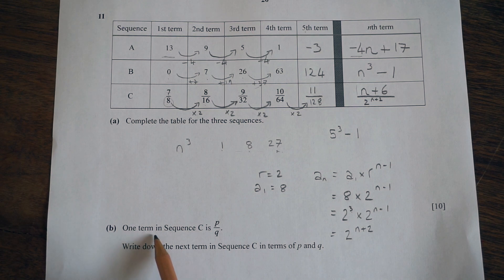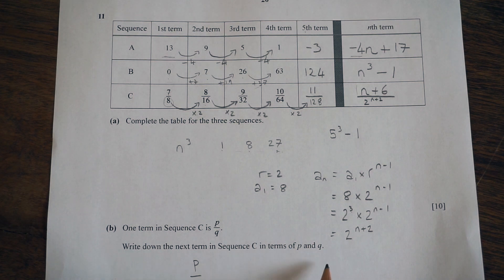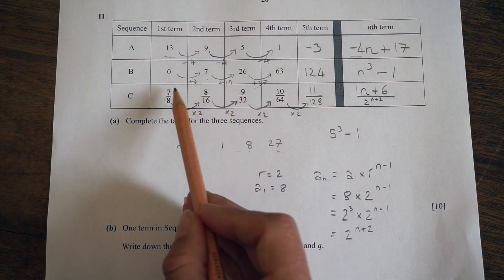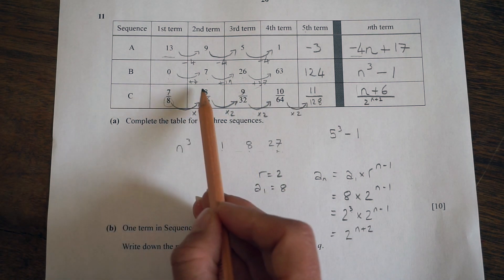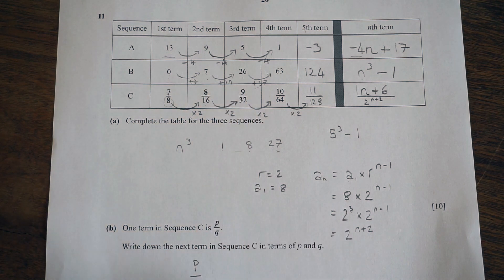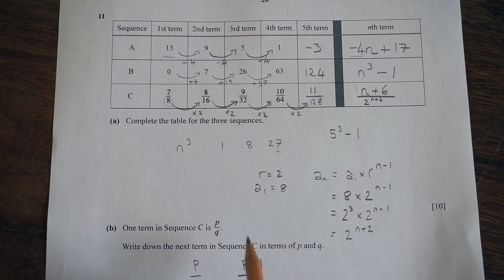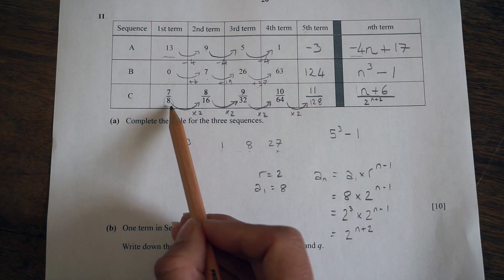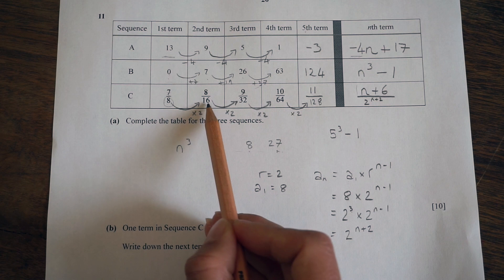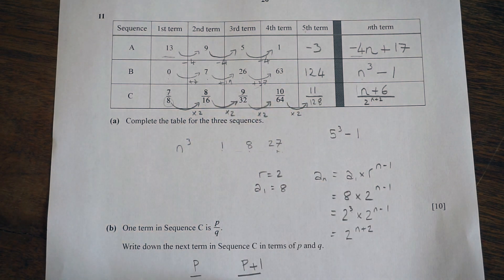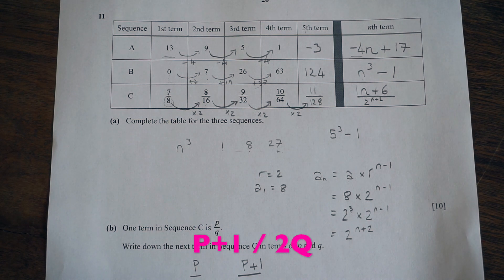Part b says one term in sequence C is p over q — write down the next term in terms of p and q. The numerator increases by 1 each time, so the next numerator is p plus 1. The denominator is multiplied by 2 each time, so the next denominator is 2q. Therefore the next term in sequence C is p plus 1 over 2q.